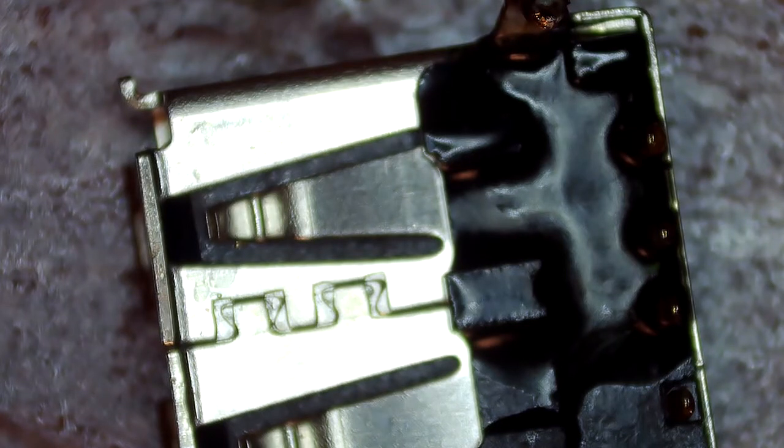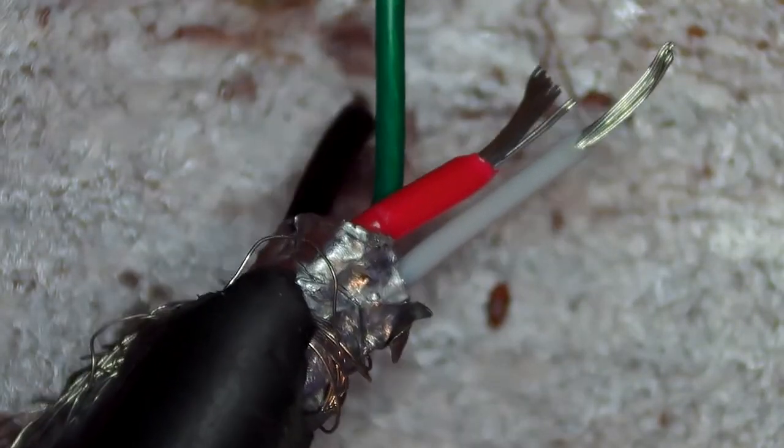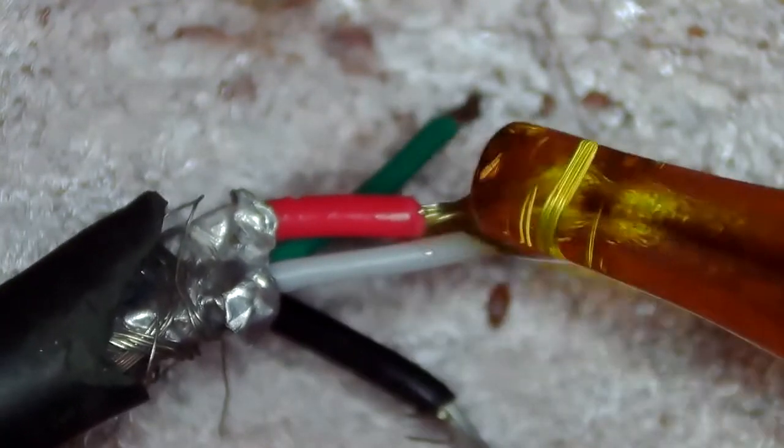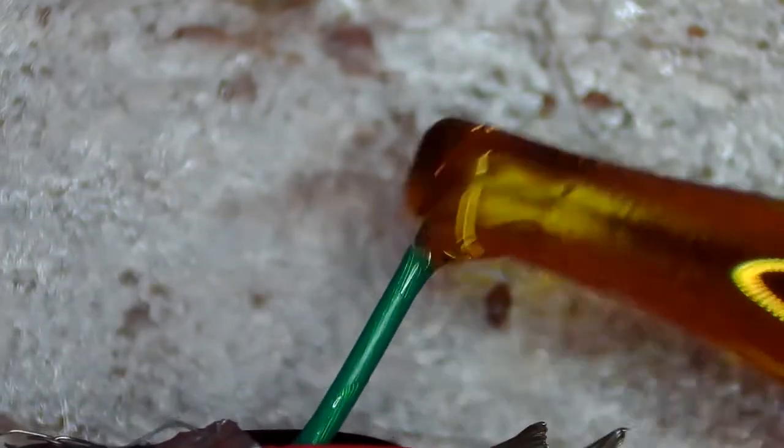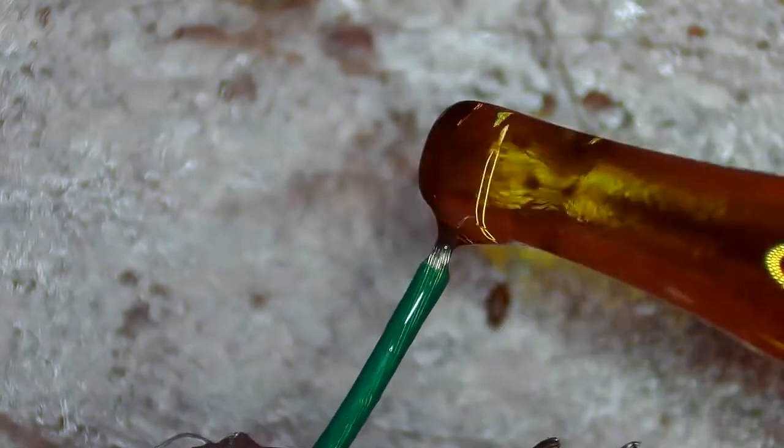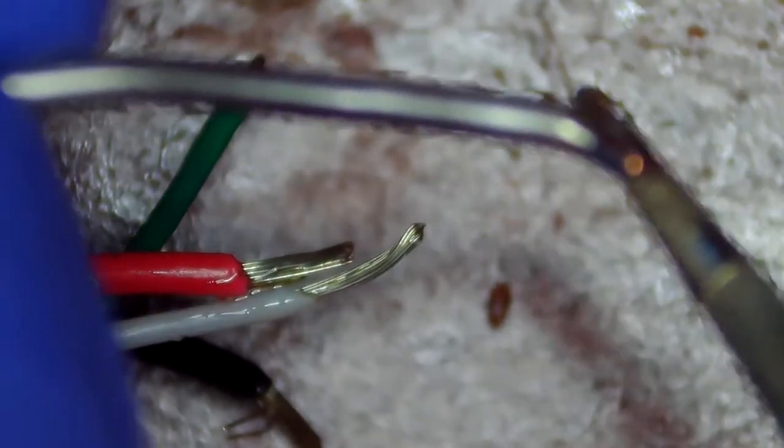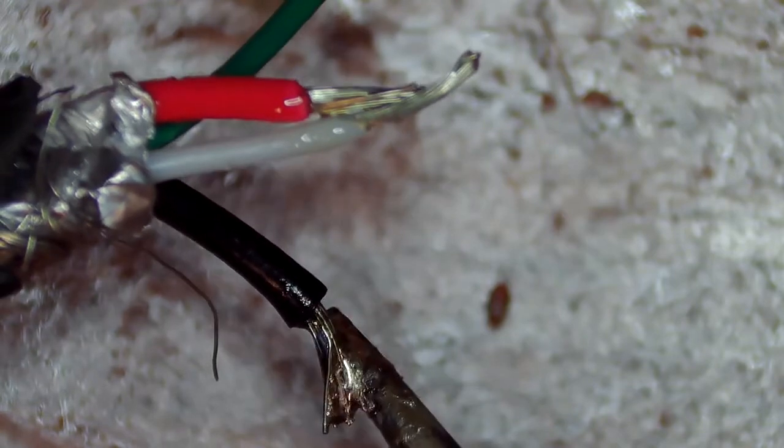I'm going to go ahead and strip these wires slightly at the ends. I've gone ahead and taken the shielding cable that goes around and I wrapped it all together. I'm going to go ahead and tin them up with some solder. For this, I'm using flux first to help the solder flow into the wire. I'm going to tin my tip here. Just let the solder flow right down to the wire.